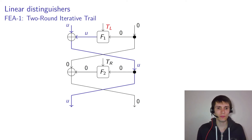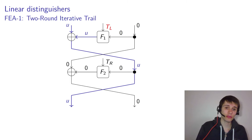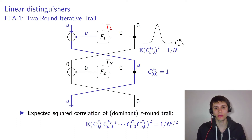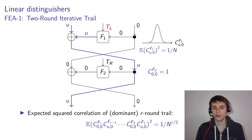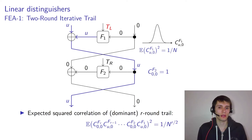Here I show the trail for mask u. The correlation of this trail: in the second round it's one because the second round is essentially inactive. In the first round, we don't know what the correlation is because it depends on the key used in F1. But because TL is fixed, we know F1 is a small function that looks like a uniform random one, so we know the distribution of this correlation — it's going to be roughly normal with a variance of 1 over N.